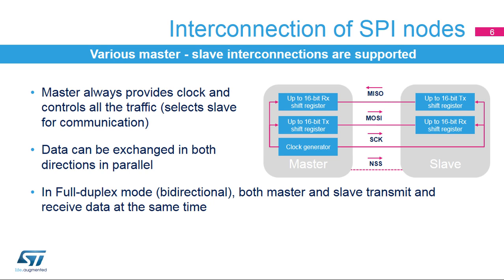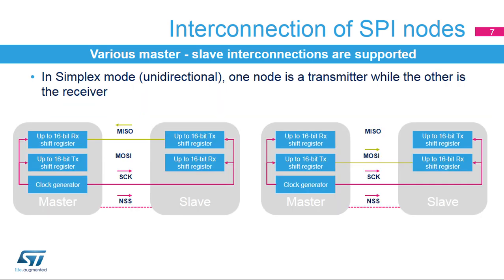In full duplex mode, both data lines are used and synchronous data flows in both directions at the same time. In simplex mode, one node transmits data while the other receives the data. Data only flows in one direction. Depending on the communication direction, only one data line is used. Unused SPI pins can be used for other purposes.